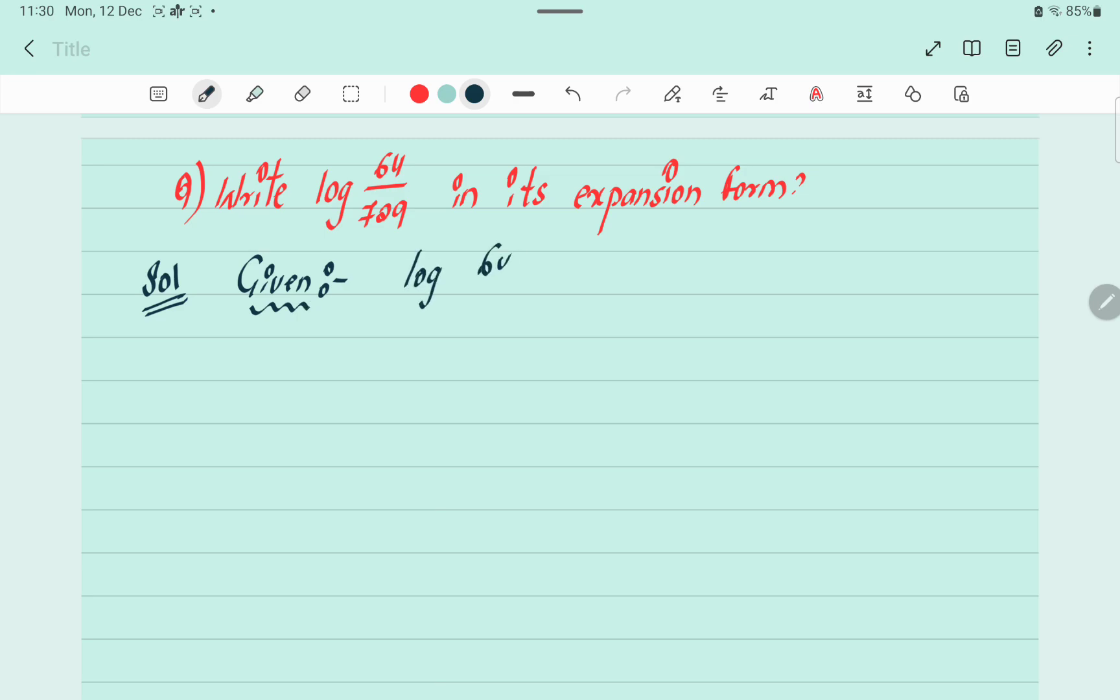Log 64 divided by 729. Okay student, so log 64 by 729 as a logarithm form we can convert it into log 64 minus log 729. It means we can change addition to multiplication in log, and division to subtraction. So here it was in division form which we have changed to subtraction.